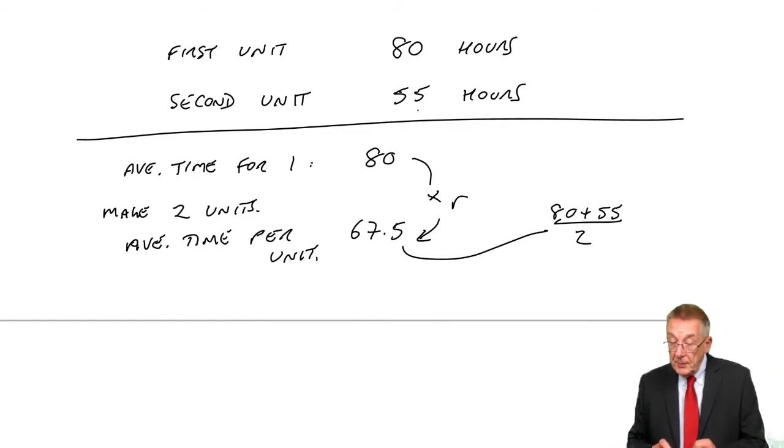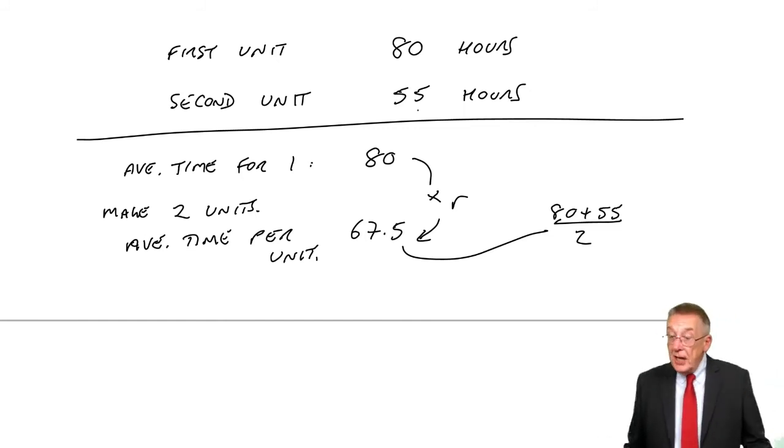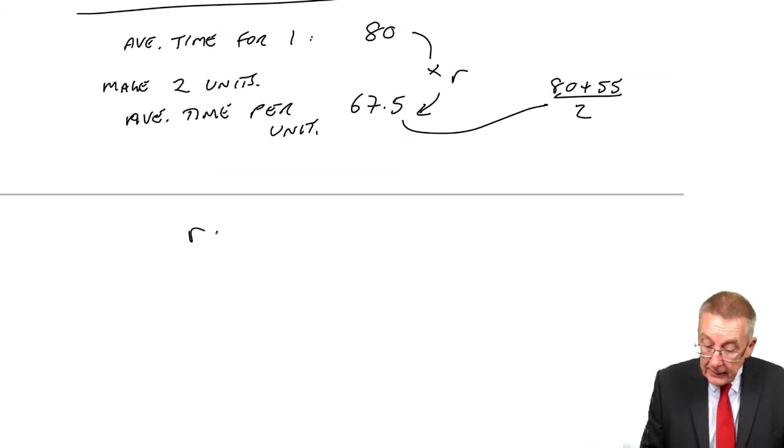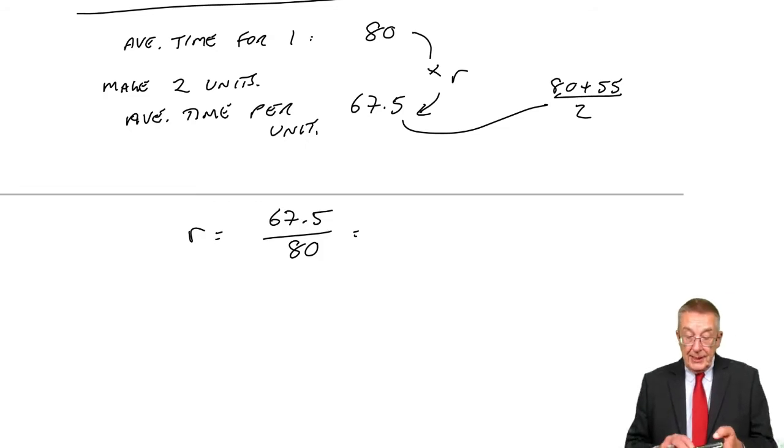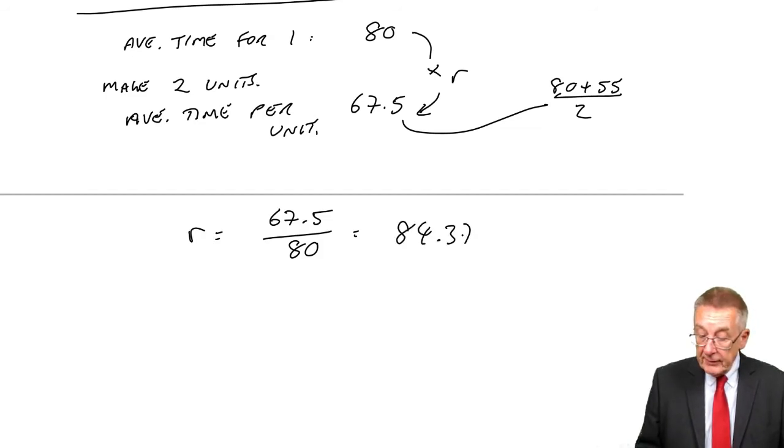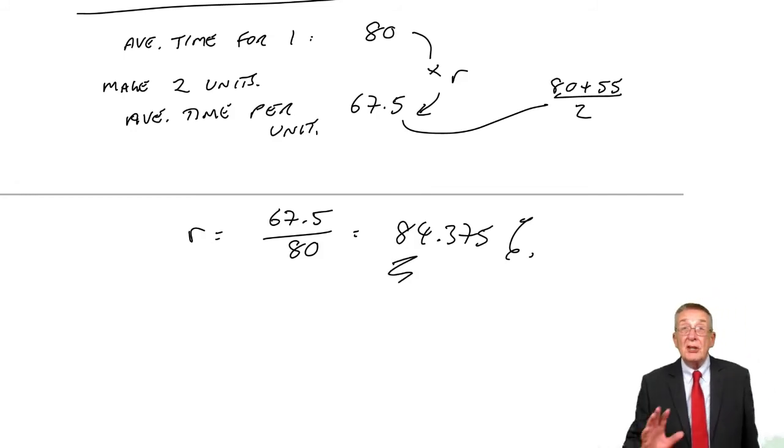Let me check that I'm not doing anything stupid. 80 plus 55 divided by two. Yeah, that's the average time per unit. And so what is the learning rate? R, the learning rate, 67.5 over 80 is 0.84375, 84.375% or I said to the nearest percent, 84%. If you've got 84%, great.